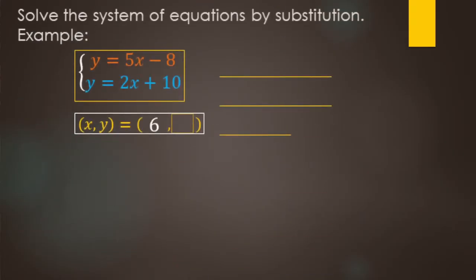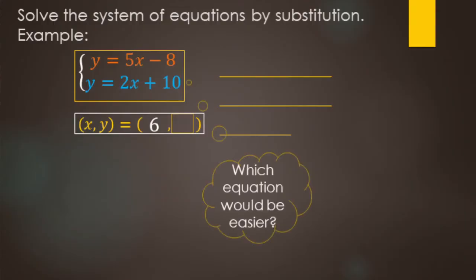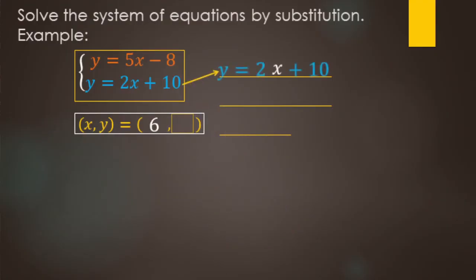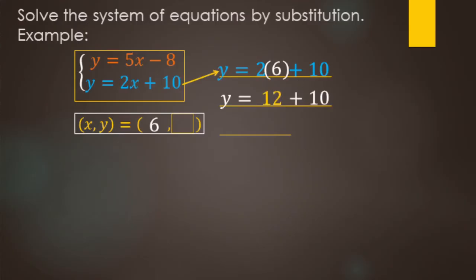To solve for y we can use either equation — we want to identify which one looks easier. The top equation requires multiplying by 5 then subtracting; the bottom requires multiplying by 2 then adding 10. The bottom equation is easier, so we use it and replace x with 6. Doing order of operations: y equals 2 times 6 is 12, plus 10 gives y equals 22.